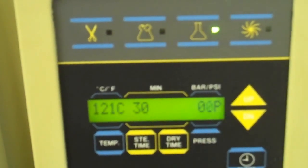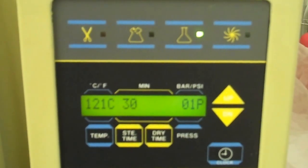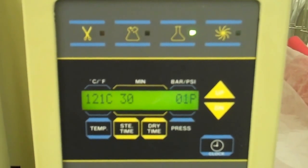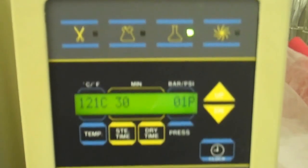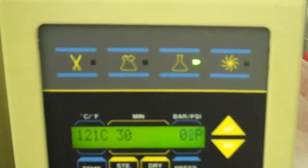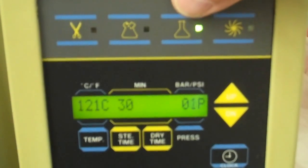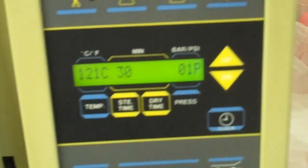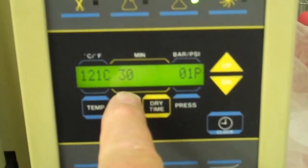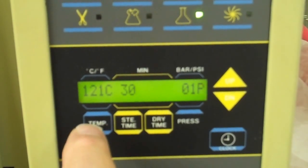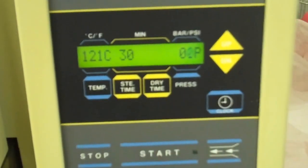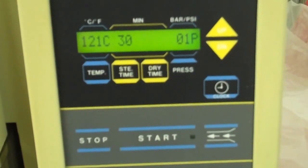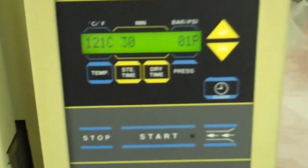We can actually use this cycle for bio waste, which makes it very simple. You just use the flask button. The time is set for 30 minutes, which is the correct time, and 121°C. When you want to start, you hit the start button, but since the door's open we wouldn't do that.